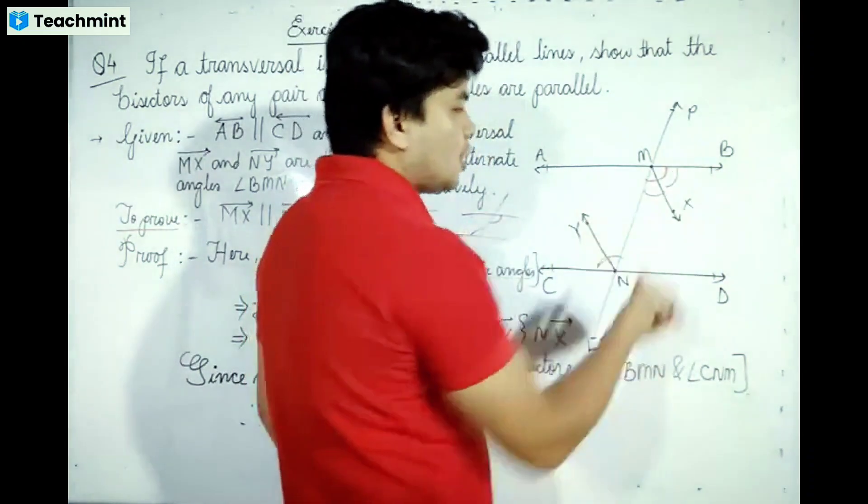Multiplying both sides by half, we get half of angle BMN equals half of angle CNM. Since MX is the bisector of angle BMN, half of BMN is angle XMN. Similarly, since NY is the bisector of angle CNM, half of CNM is angle YNM.